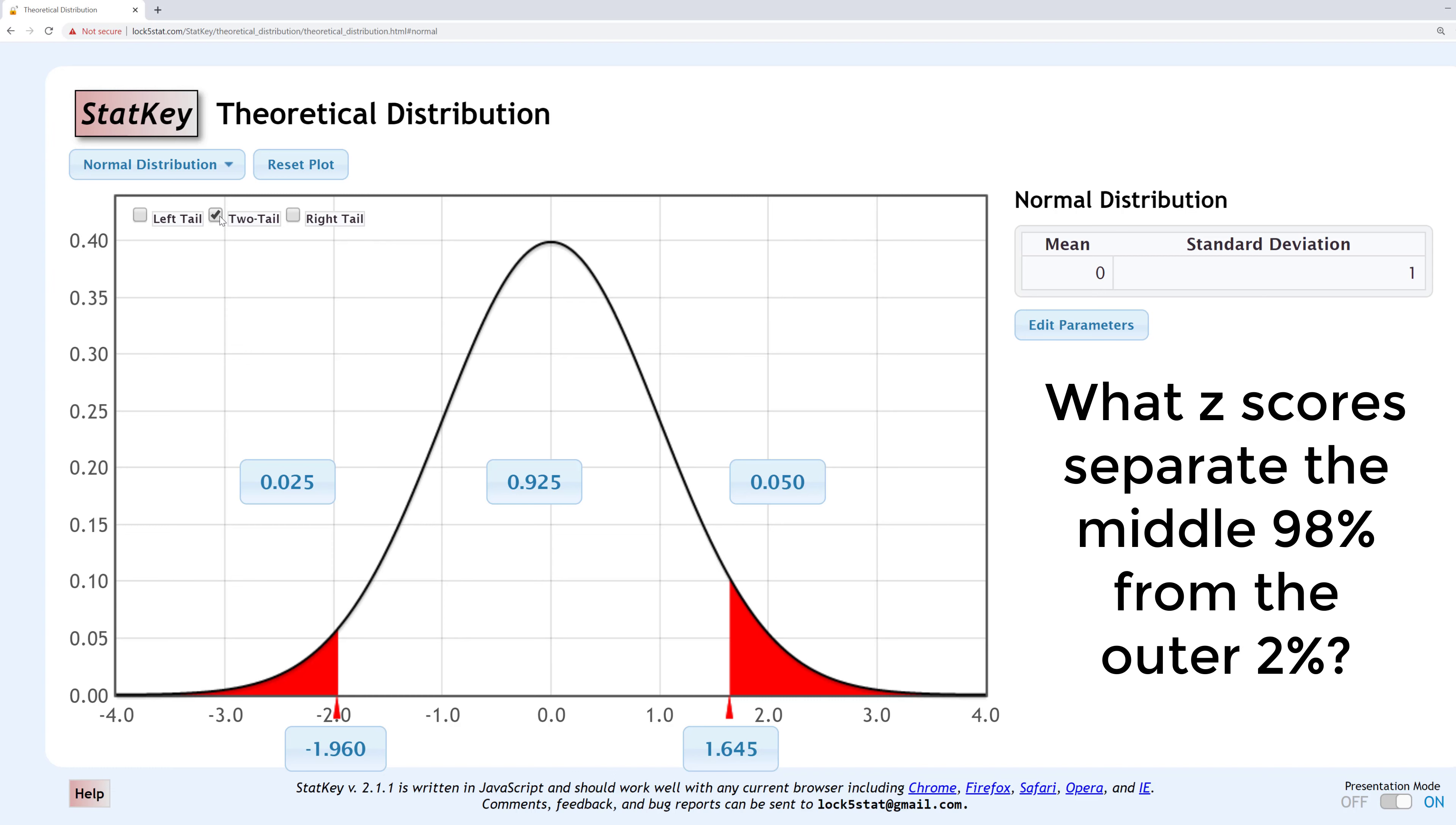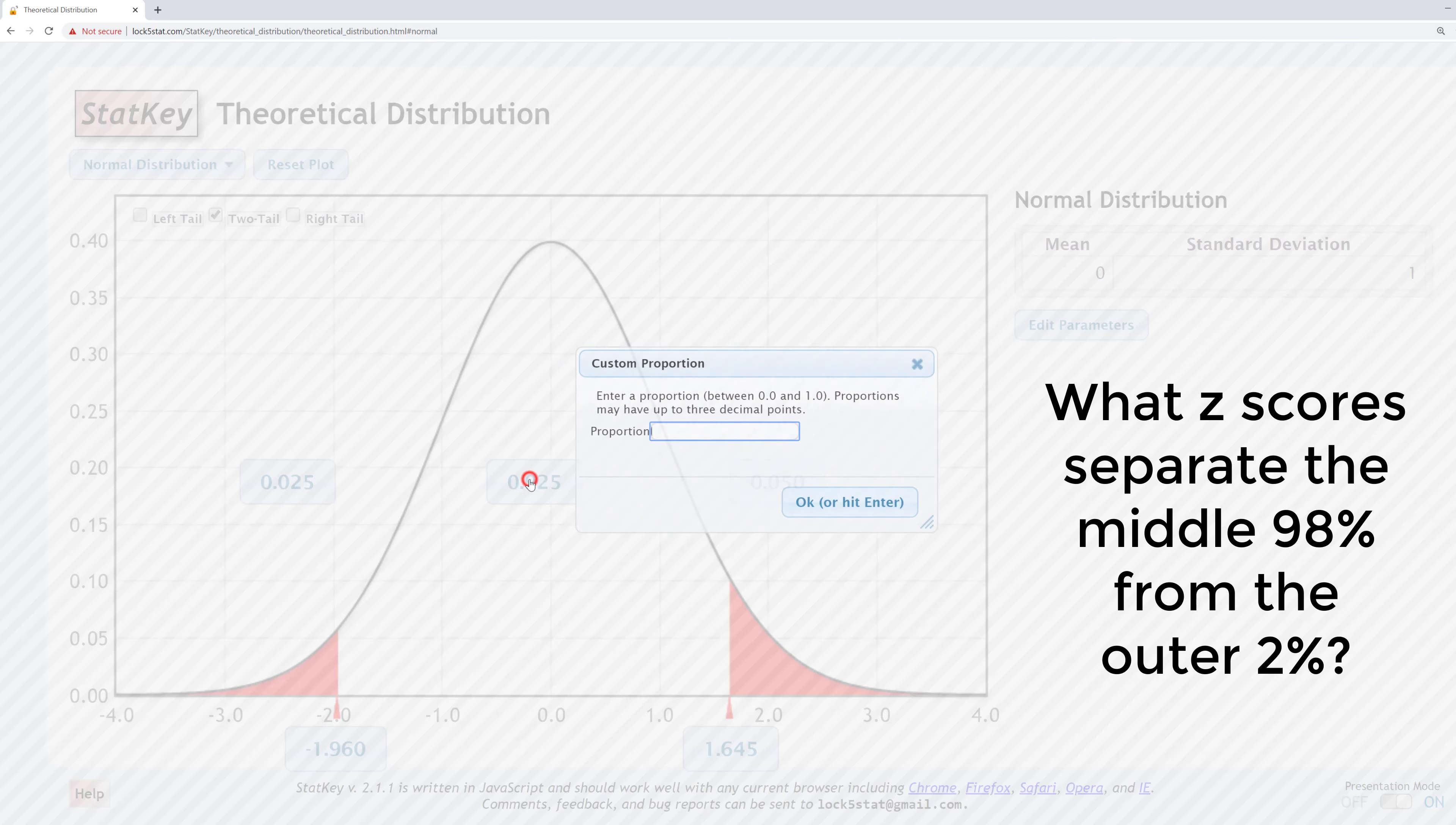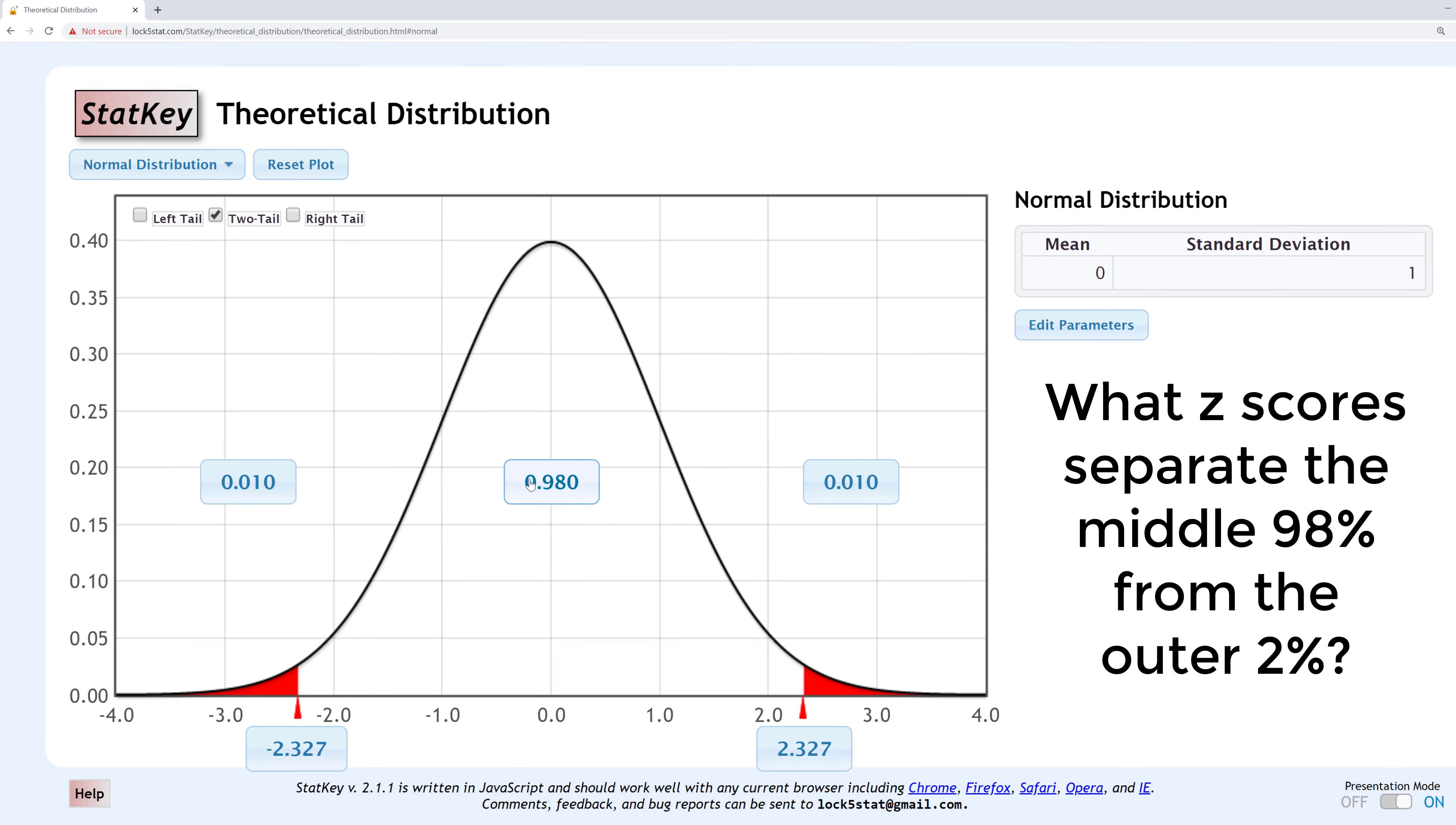Or we also know that there's 98% in the middle, so we can go ahead and change the middle value, which is what I'll do here, to 0.98. And we can see that automatically changes each of our tails to 0.010. The Z-scores that separate the middle 98% from the outer 2% are plus and minus 2.327.